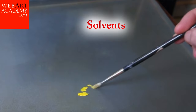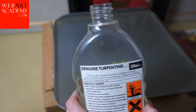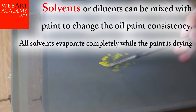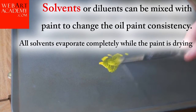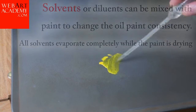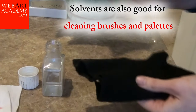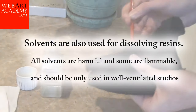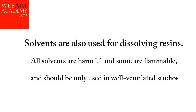Solvents. Solvents or diluents can be mixed with paint to change the oil paint consistency. All solvents evaporate completely while the paint is drying. Solvents are also good for cleaning brushes and palettes, and are used for dissolving resins. All solvents are harmful and some are flammable; they should only be used in well-ventilated studios.